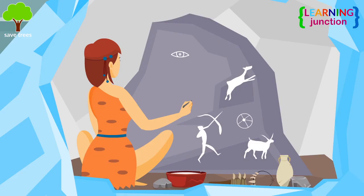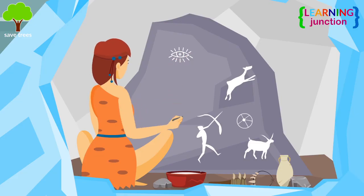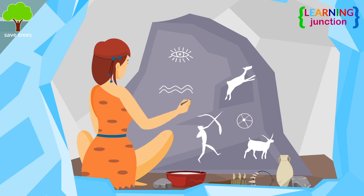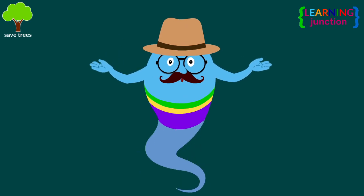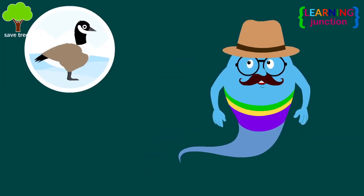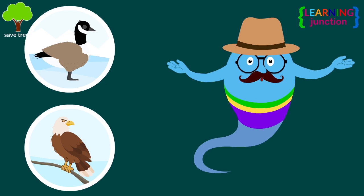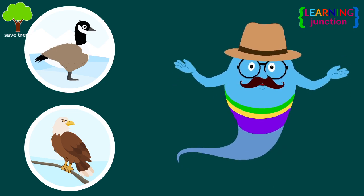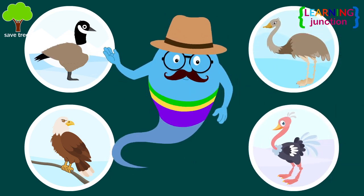People used to draw pictures of animals and various other things on the walls of their caves. Birds flourished during this period, including members of the geese and eagle families. There were also some flightless birds, such as rheas and ostriches.